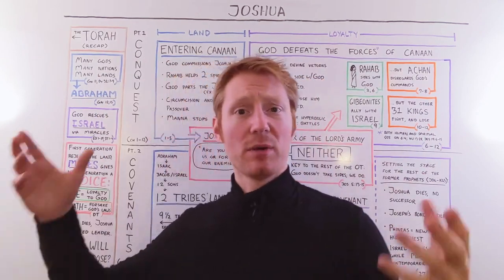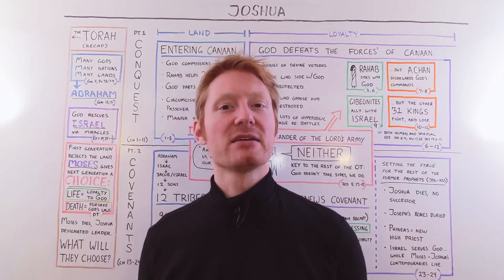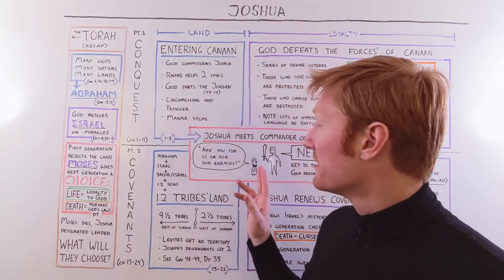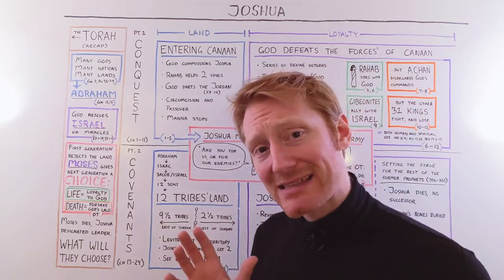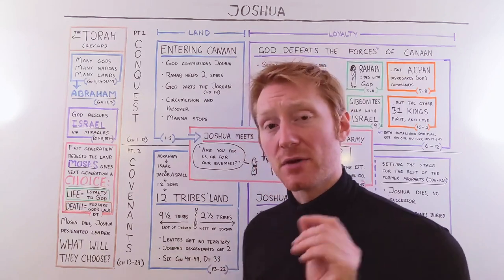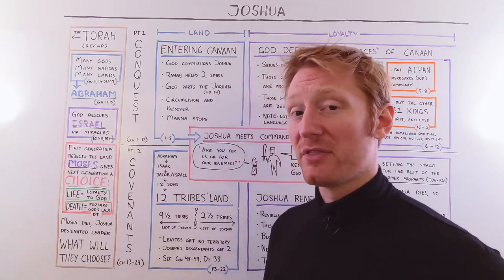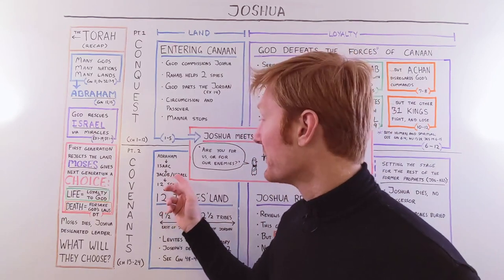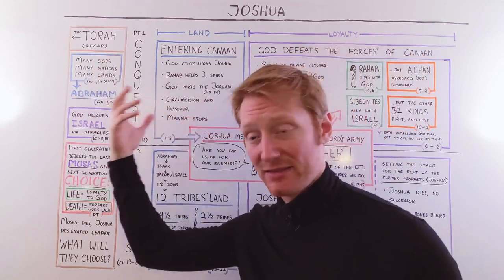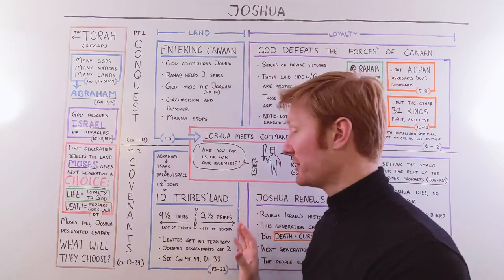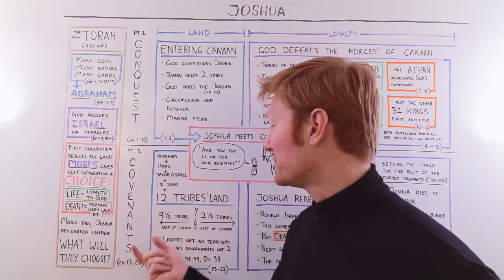That wraps up part one of Joshua, where we see them conquering the land. Now let's look at part two, which focuses more on the covenants that God and the people of Israel have made and how they're fulfilled. The first part of part two is chapters 13 through 22 — not the most exciting part of the Bible, but important nonetheless. The nation of Israel is made up of 12 tribes, which came from the 12 sons of Jacob, who was called Israel, the son of Isaac, the son of Abraham. In Joshua chapters 13 through 22, we have Joshua assigning land and territory to the 12 tribes, seeing that promise from Genesis come true.